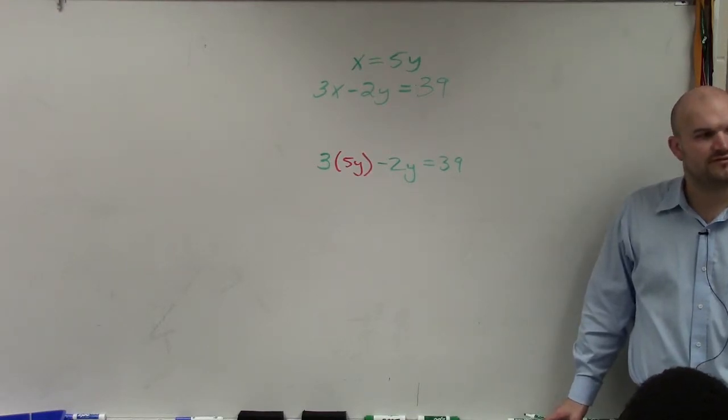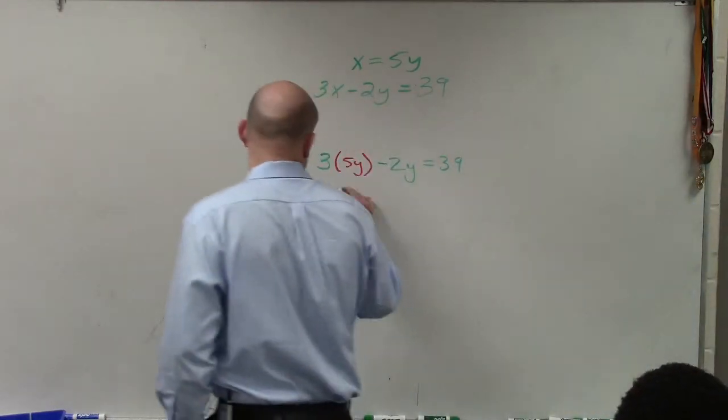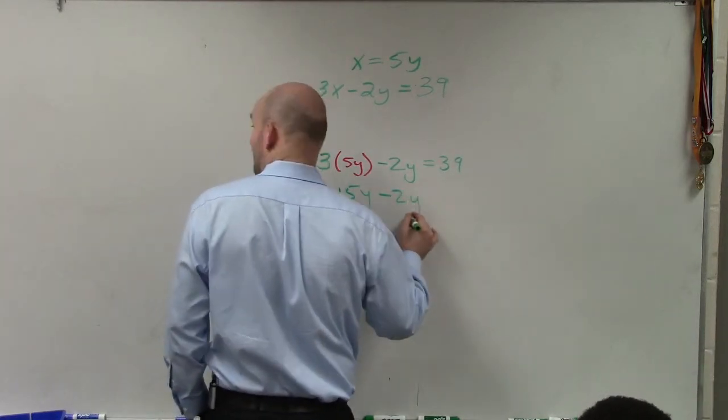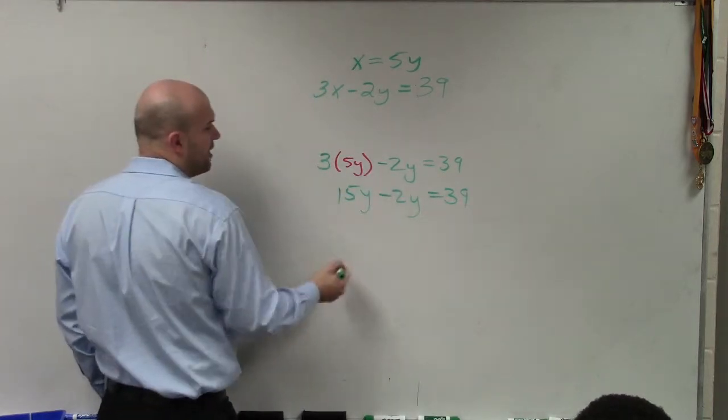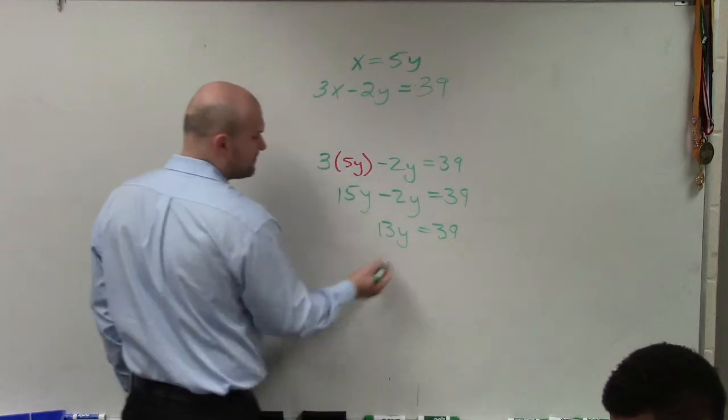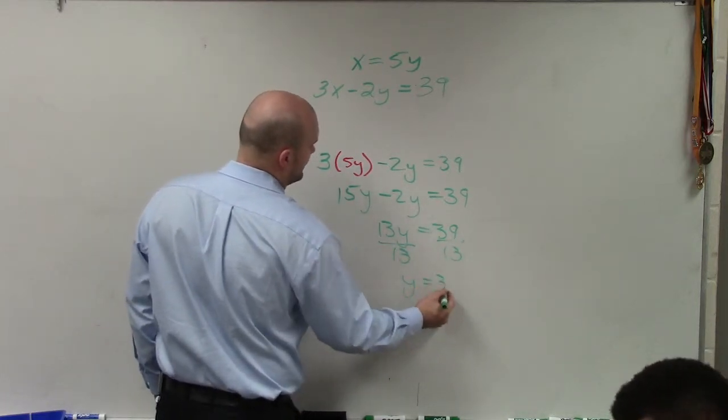Just plug it in like 5y. So x is 39, 15y minus 2y is 13y equals 39. Divide by 13, divide by 13, y equals 3.